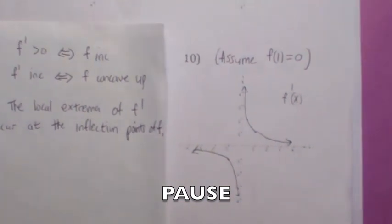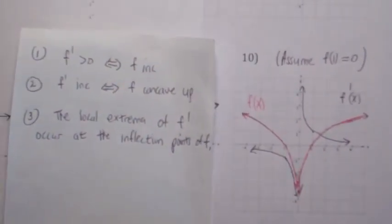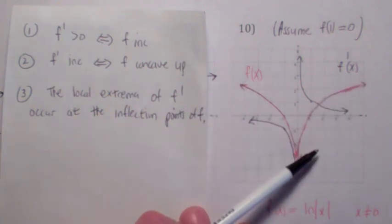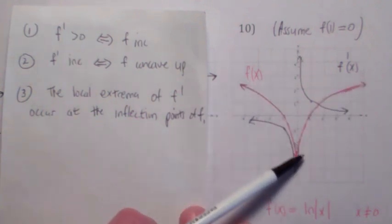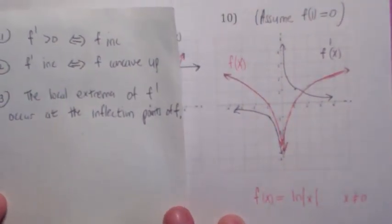Okay, this looks like 1 over x, doesn't it? So, sure enough, when you look at the graph of f, you should get this function here. f looks kind of like this, which is exactly the log of the absolute value of x, which is what we talked about.